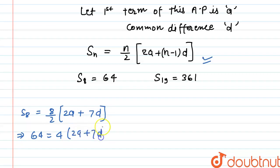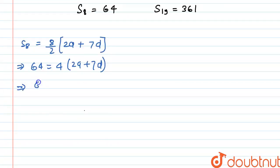And this will be equal to 64 by 4, that should be equal to 2a plus 7D. And further we can write this, that is 16 is equal to 2a plus 7D. And let this is our equation number 1.